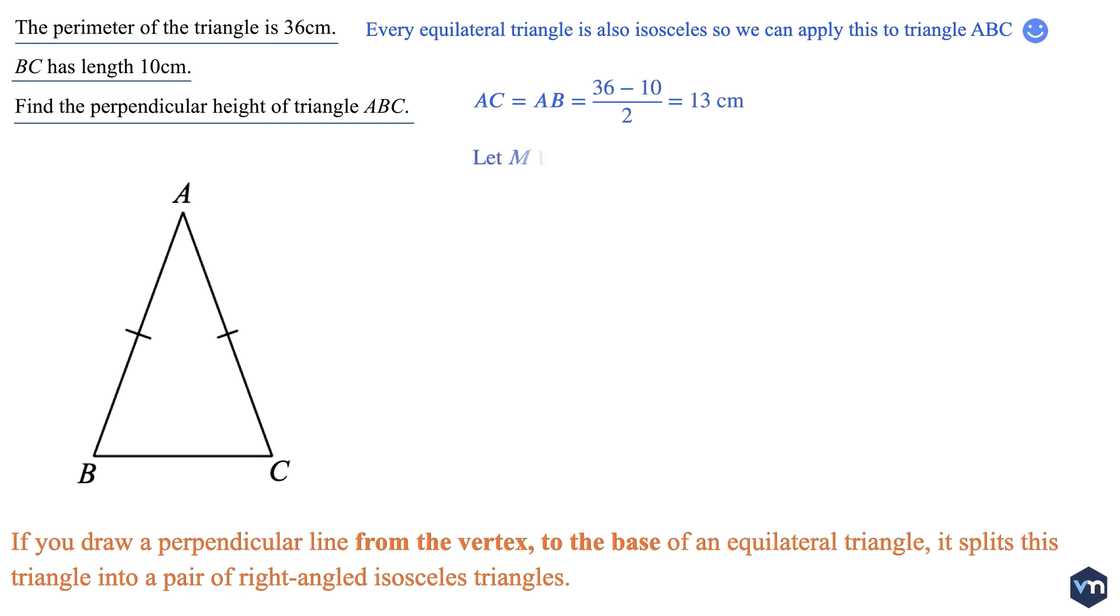Now let M be the midpoint of BC. The length of AM is the perpendicular height of the triangle ABC.